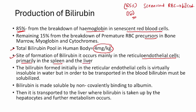The site of production is the reticuloendothelial cells, primarily in the spleen and the liver. These organs trap old or senescent RBCs that are about to die. The RBCs get lysed, hemoglobin is released, and from the heme part of hemoglobin, bilirubin is produced. The initial bilirubin is virtually insoluble, but to transport it to the liver it must be made water-soluble by binding non-covalently to albumin.